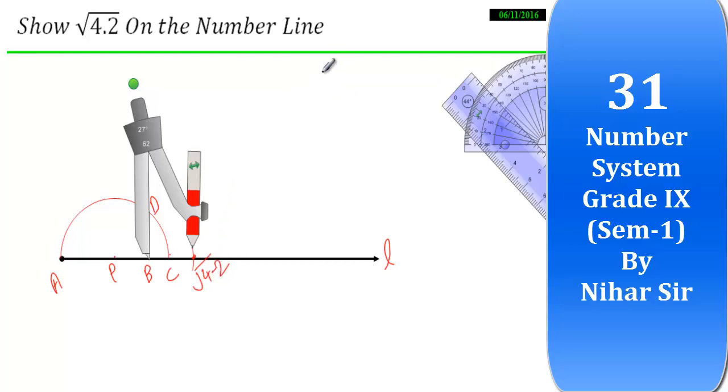So the method of showing numbers like this, 2.5, 5.3, on the number line is something different from showing a natural number. They are the square root of a natural number. This is a natural number, its square root is something different. So you must recall everything, revise everything before you go for the examination.